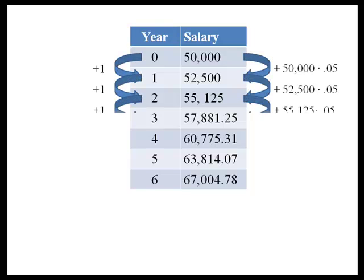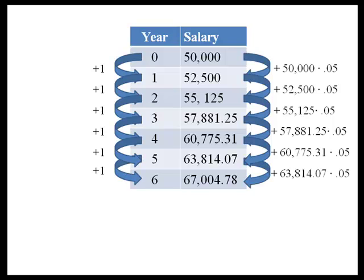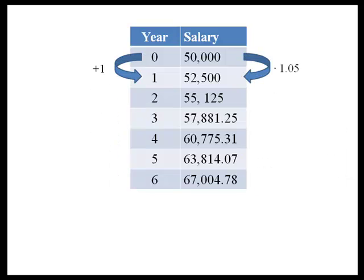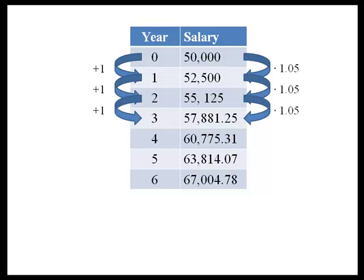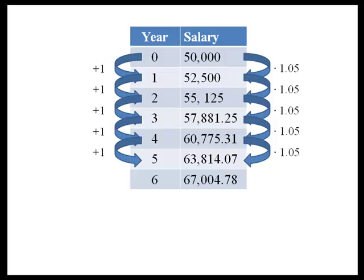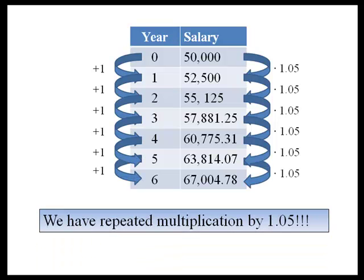So we were able to do this for each year. Each year we went up by 5% of the year before. To get to each next salary, what's happening is we're taking the year before and multiplying by 1.05. $50,000 times 1.05 is $52,500. Multiply by 1.05 again and we get the next year. So each year we increase, we're actually multiplying by 1.05.